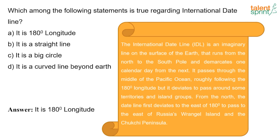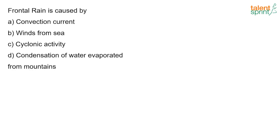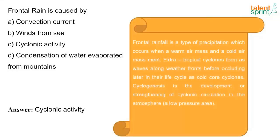Frontal rain is caused by cyclonic activity. Frontal rain is a type of precipitation which occurs when a warm air mass and a cold air mass meet. The extra-tropical cyclones form as waves along weather fronts before occluding and later in the life cycle as cold-core cyclones. Cyclogenesis is the development or strengthening of cyclonic circulation in the atmosphere at a low pressure area.